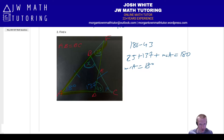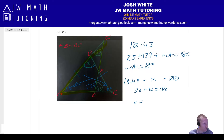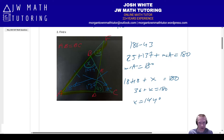Angle C is also 18 degrees because they're across from congruent sides — in an isosceles triangle, two congruent sides give two congruent angles. So to get x, you add 18 plus 18 plus x equals 180, giving 36 plus x equals 180, so x equals 144 degrees. Again, the numbers in the specific problem you had may vary, but this is the basic approach to this overlapping triangle problem.